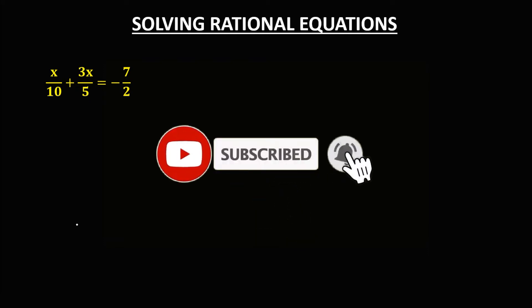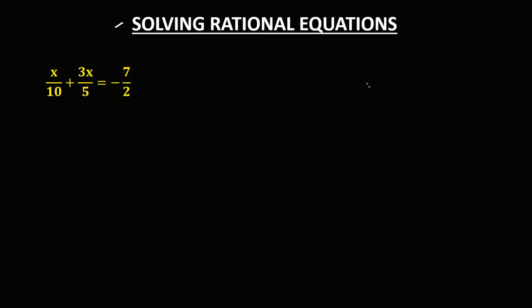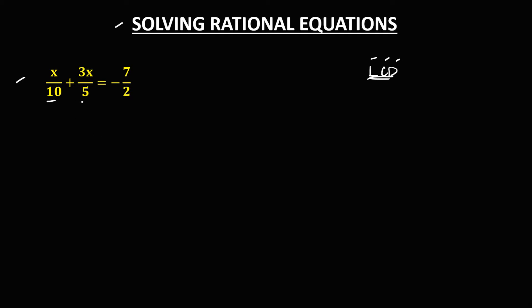Welcome to MathStorya. In solving rational equations, we first need to find the LCD of the given denominators — that's the least common denominator. For this given rational equation, the denominators are 10, 5, and 2.